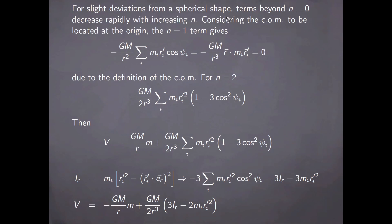In the case of slight deviations from a spherical shape, we expect terms beyond n equals 0 to be non-vanishing, but also to decrease rapidly with increasing n. If we consider the center of mass to be located at the origin and look at the n equals 1 term — the dipole term — then writing it out explicitly, we can write the product between these radii and the cosine as the dot product between the center-of-mass to Sun radius and the relative distance of particle i to the center of mass. Since the center of mass is located at the origin, by the definition of the center of mass, the implicit sum is 0, so the dipole term vanishes. This leaves us with the quadrupole term, having n equal to 2, with the expression given here.